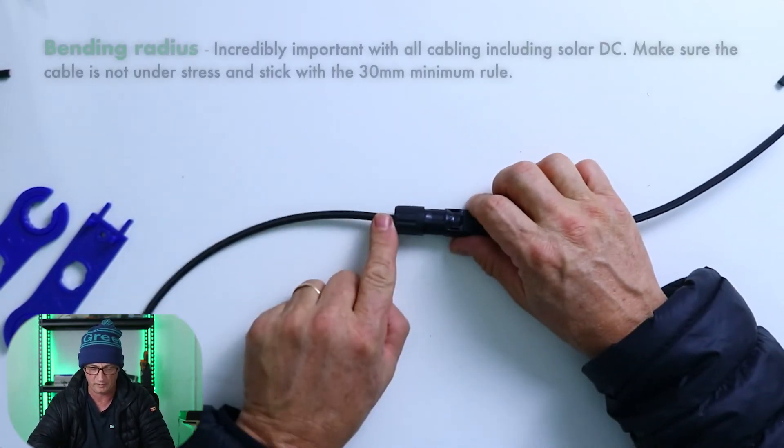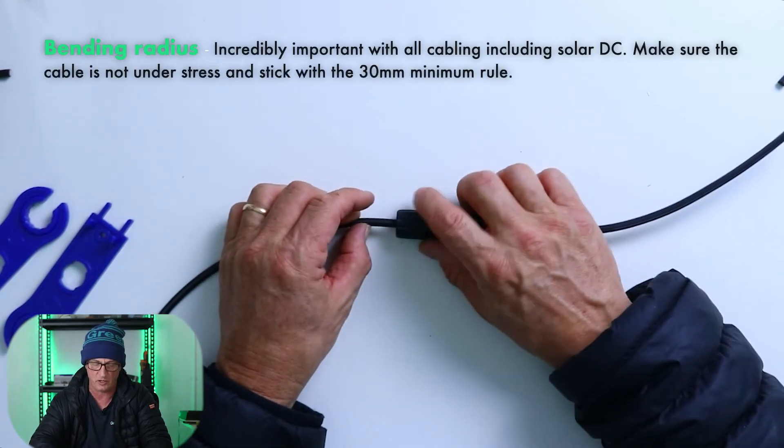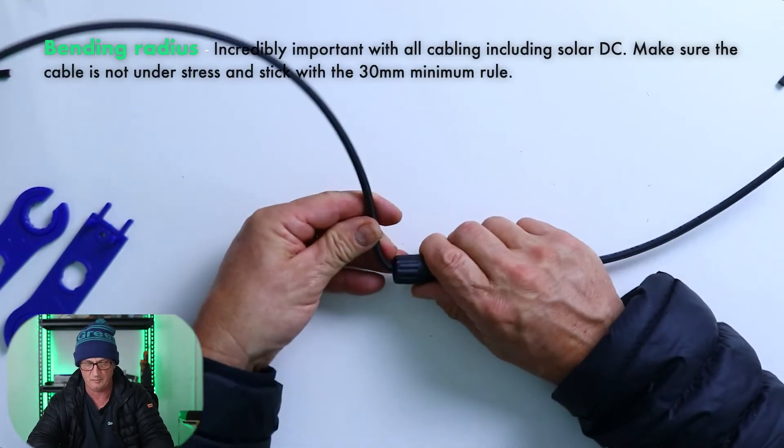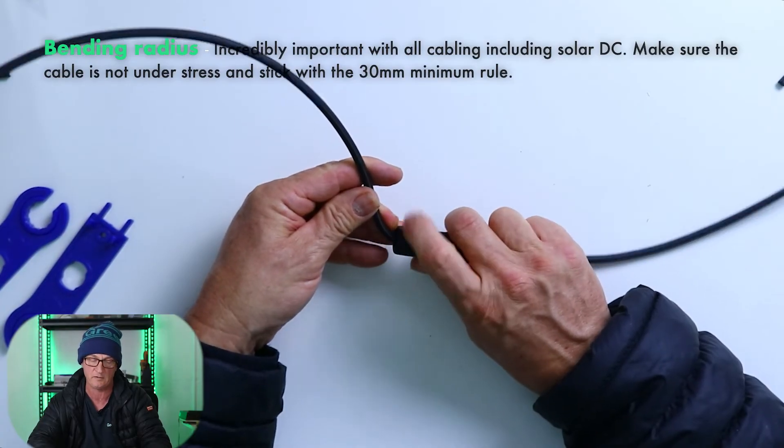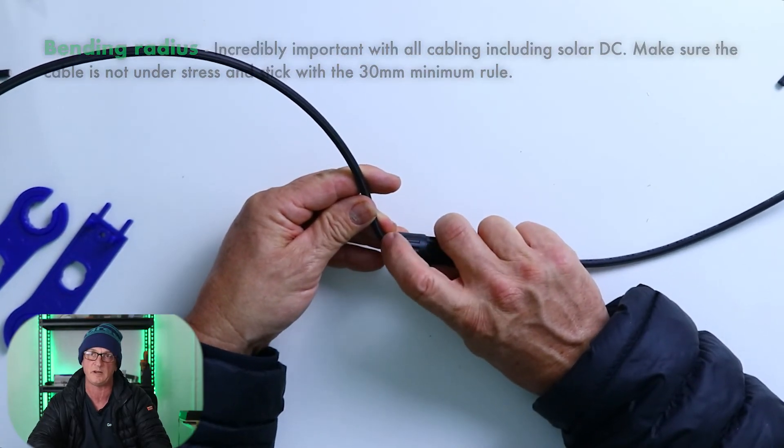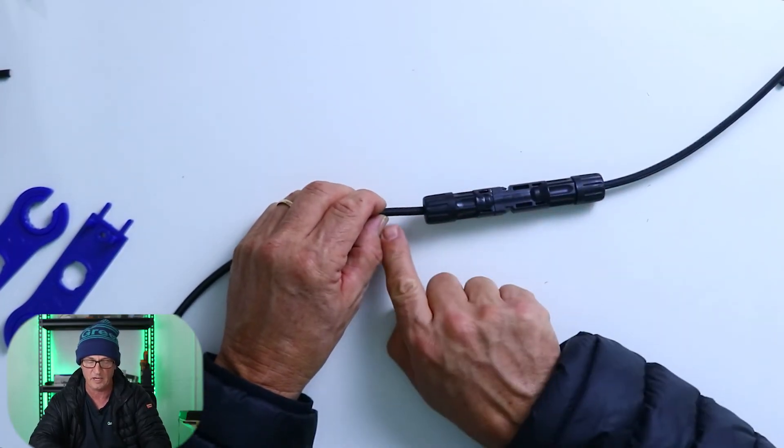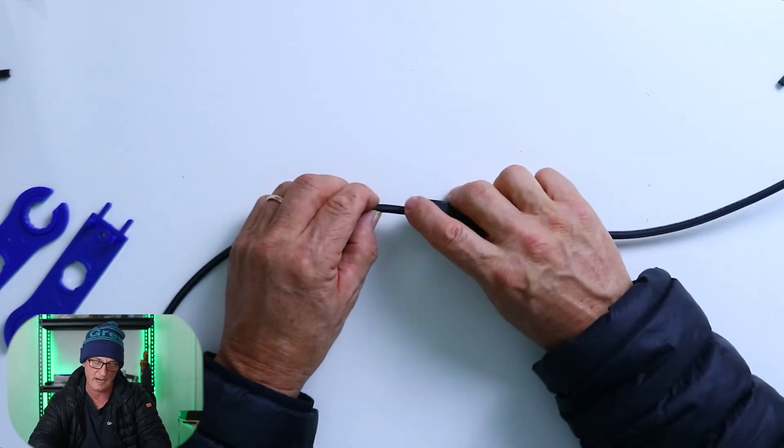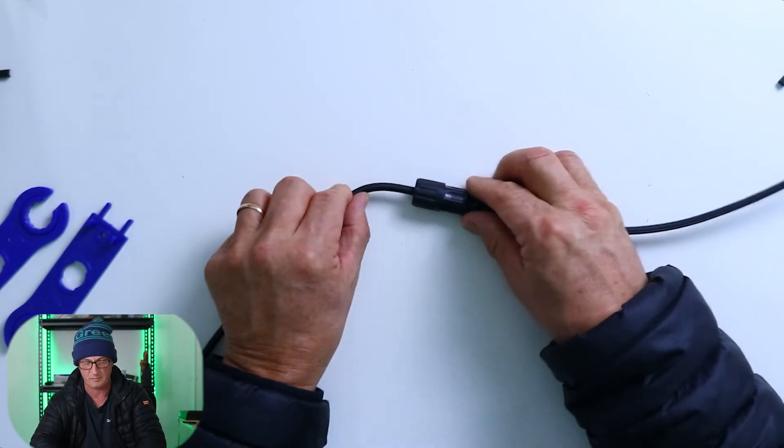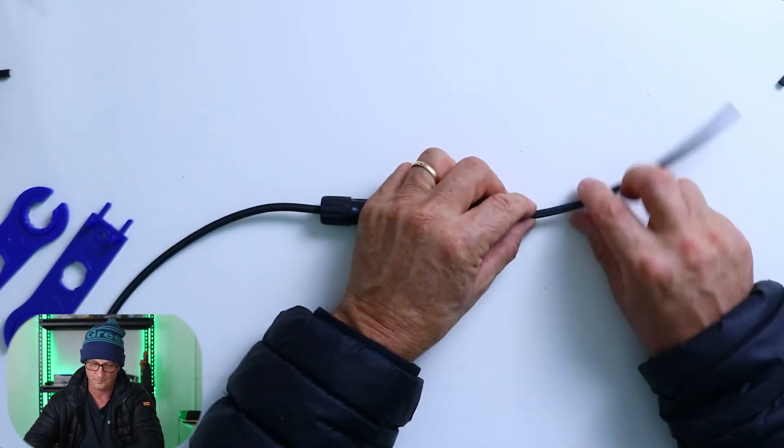A couple of really important points. Bending radiuses of cable. You see this in a lot of jobs where people have bent them like this. Don't do that. You'll start breaking strands and you've gone past the bending radius of this 6mm cable. Rule of thumb is allow at least 30mm outside the actual end of the MC4 before you start bending. That's acceptable.